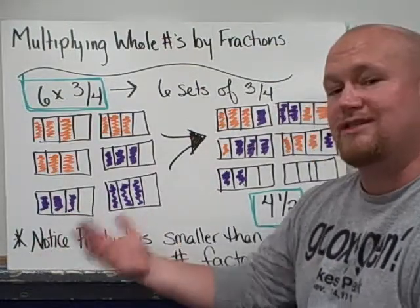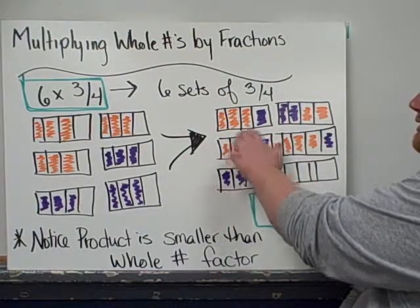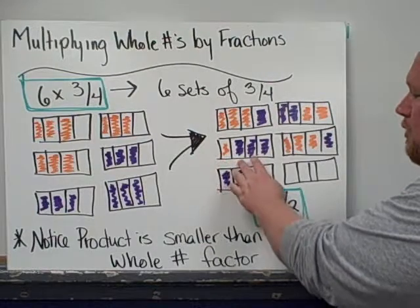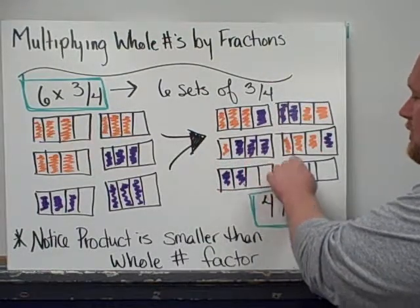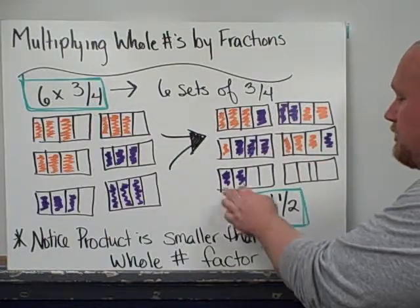Now what that looks like if we stick them all together is I've alternated. I have three-fourths, three-fourths, one, two, three-fourths, one, two, three-fourths, one, two, three-fourths, one, two, three-fourths, and then the final set of one, two, three-fourths.